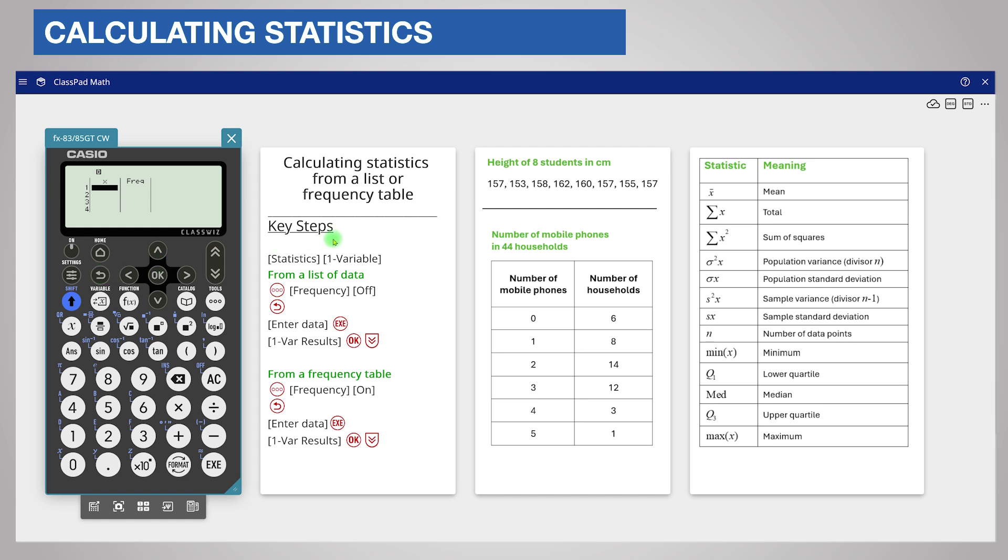Our data is the number of mobile phones in 44 households. First, enter the number of mobile phones in each household in the x column. Now scroll right and page up to return to the top of the frequency column. You can now enter the frequencies. Make sure that the data are correct before calculating the statistics.